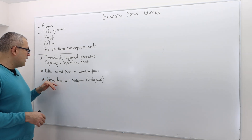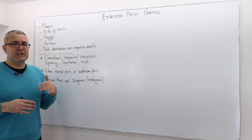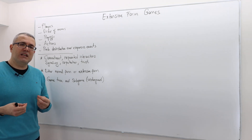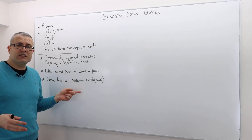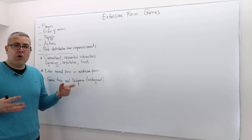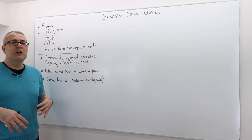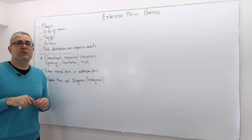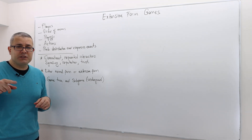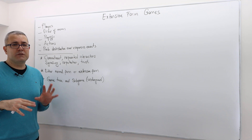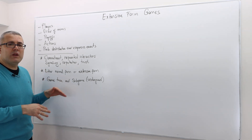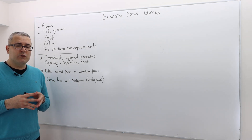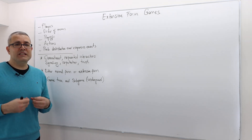When we describe an extensive form game, we usually draw a game tree and talk about notions like sub-game. These are concepts I defined in quite detail in my undergrad game theory course. I assume that you guys know or remember all of those. If you don't, please go back — I'm going to put the link under the description of this video. Please check those videos first, refresh your memory, and then come back.